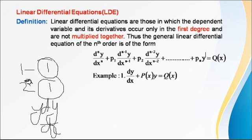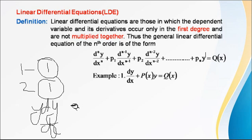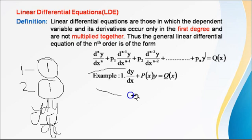To summarize: the degree of the differential equation is 1, the exponent of each dependent variable is 1, and no term is a product of y and dy. For example, dy/dx + P(x)·y = Q(x) is a linear differential equation.